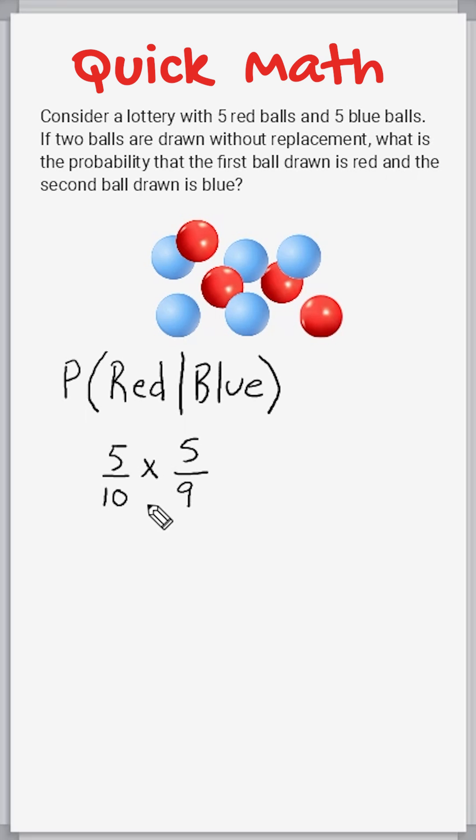So what we have to do now is just multiply these two fractions together to get the probability of selecting a red and then a blue. Now, 5 out of 10 is the same thing as 1 half, so we're just going to reduce that really quick, and then do 1 times 5 is equal to 5,